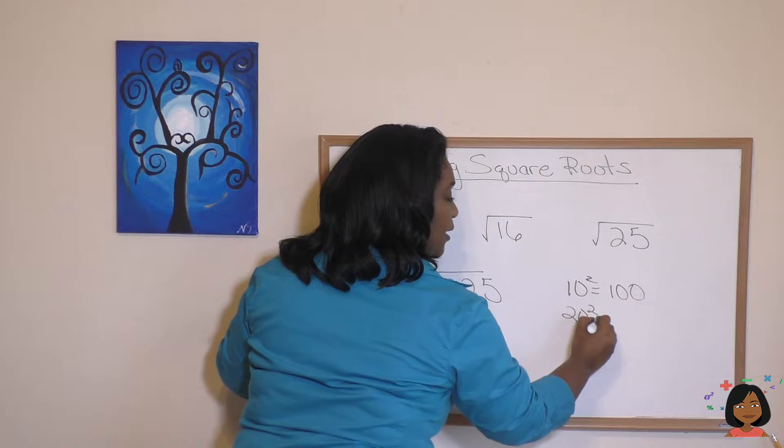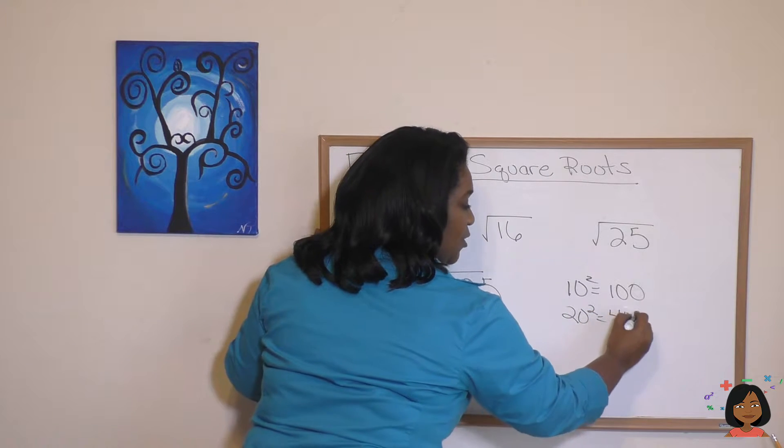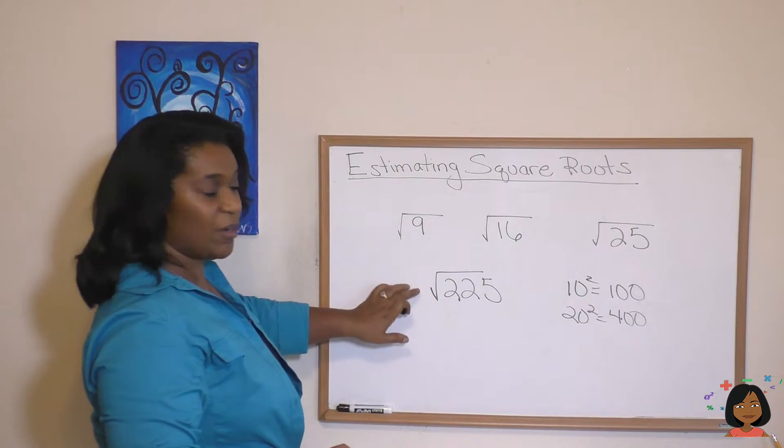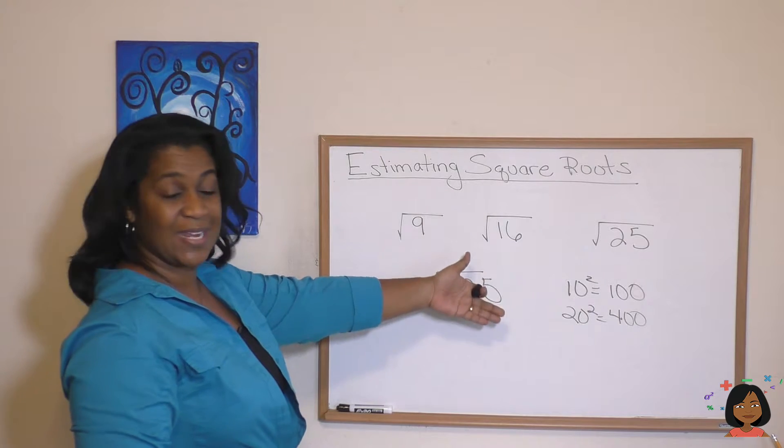What if we did 20 times 20? 20 squared is 400. So we know our answer is going to be between 10 and 20.